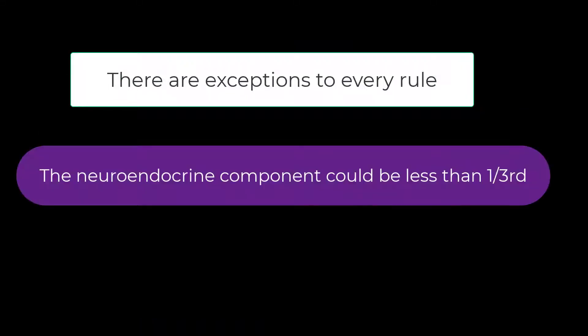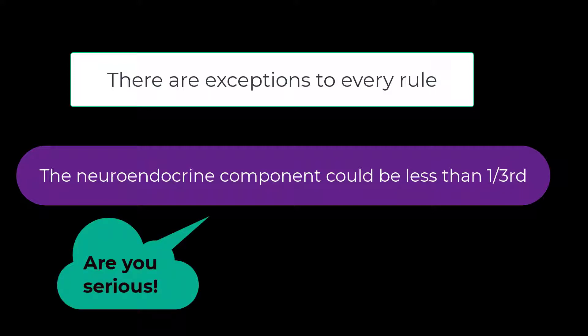That said, there are exceptions to every rule. The exception here is that the neuroendocrine carcinoma component can be less than a third — and I am deadly serious about this. Let's take a look at this periampullary tumor.